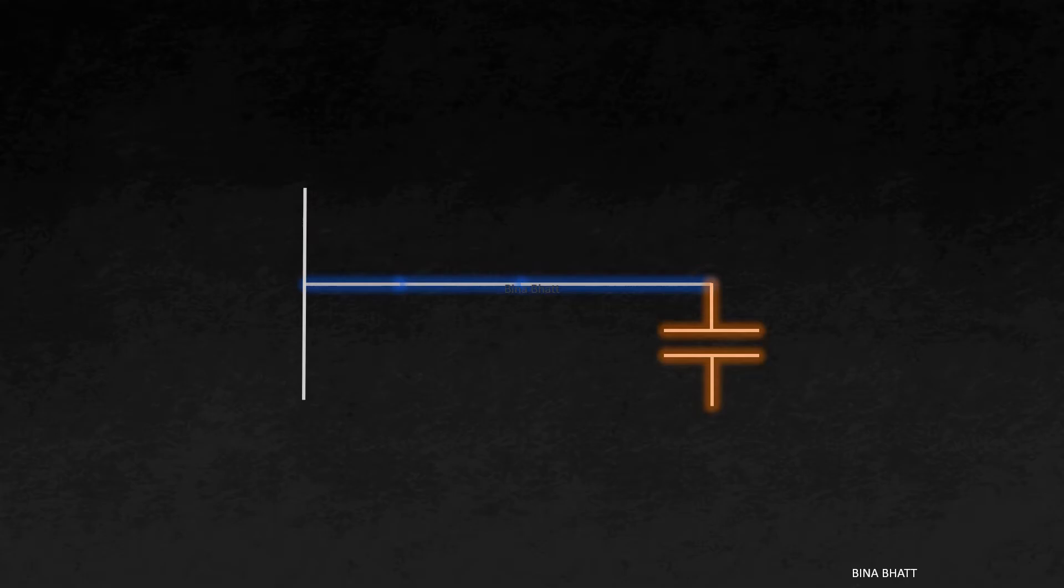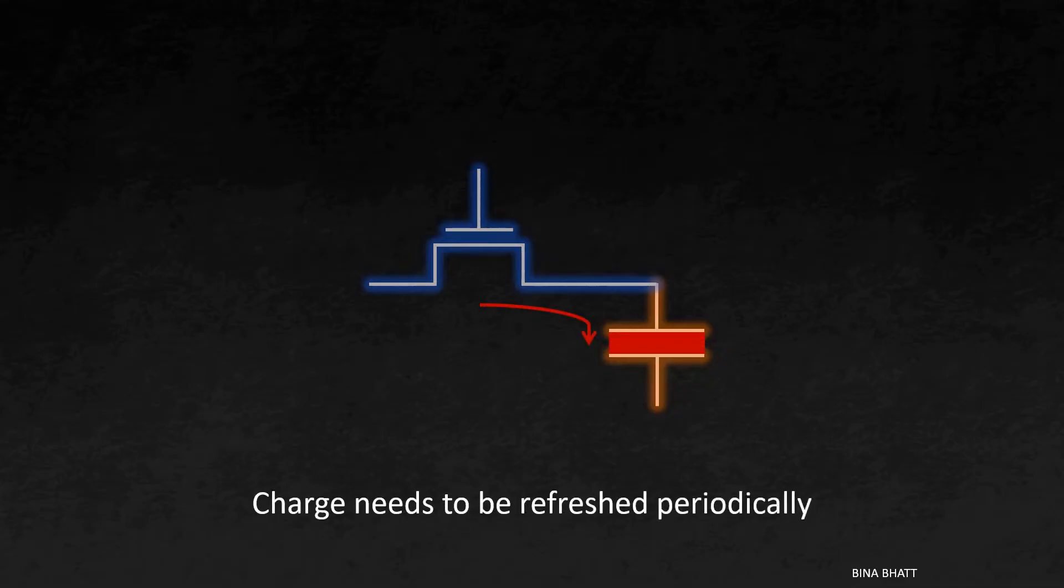As discussed in the previous video, DRAM requires a refresh process. Since DRAM is composed of many cells, refreshing each cell individually would consume all our time, leaving none for access operations.